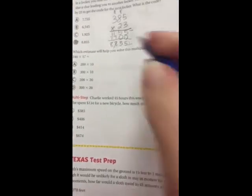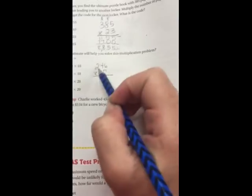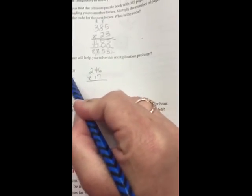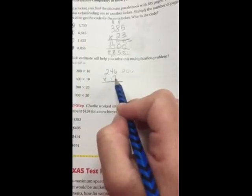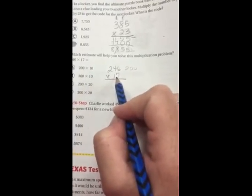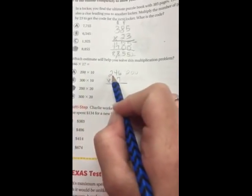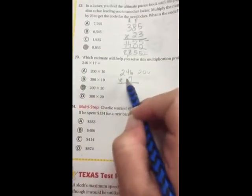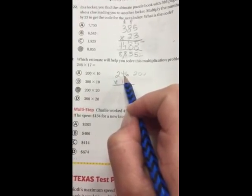Alright, perfect. Number 23 is an estimating question. Which estimate will help you solve this multiplication problem? You need to look and see what are my options. So, first of all, 246 times 17. So, this right here has got 200 times 10. That's going down. And the question is 17 closer to 10 or closer to 20? It's closer to 20. That's why I believe that this one is going to be C. Because 246 does not need to be rounded up to 300. 200 is way closer than 300 if you're at 246. That's not quite half. Halfway between 200 and 300 is 250.